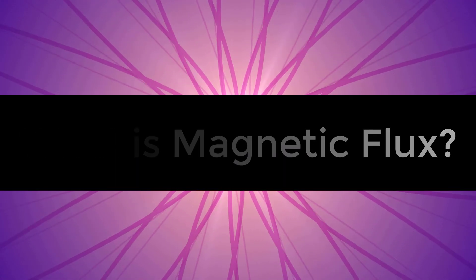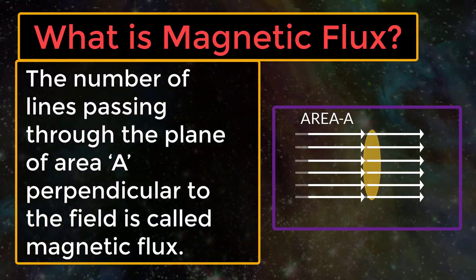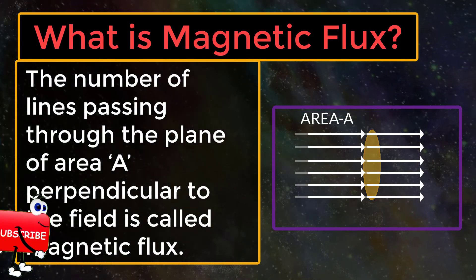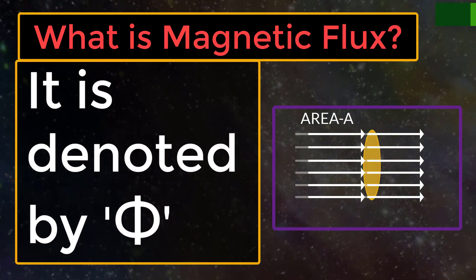What is magnetic flux? The number of lines passing through the plane of area A perpendicular to the field is called magnetic flux. It is denoted by phi.